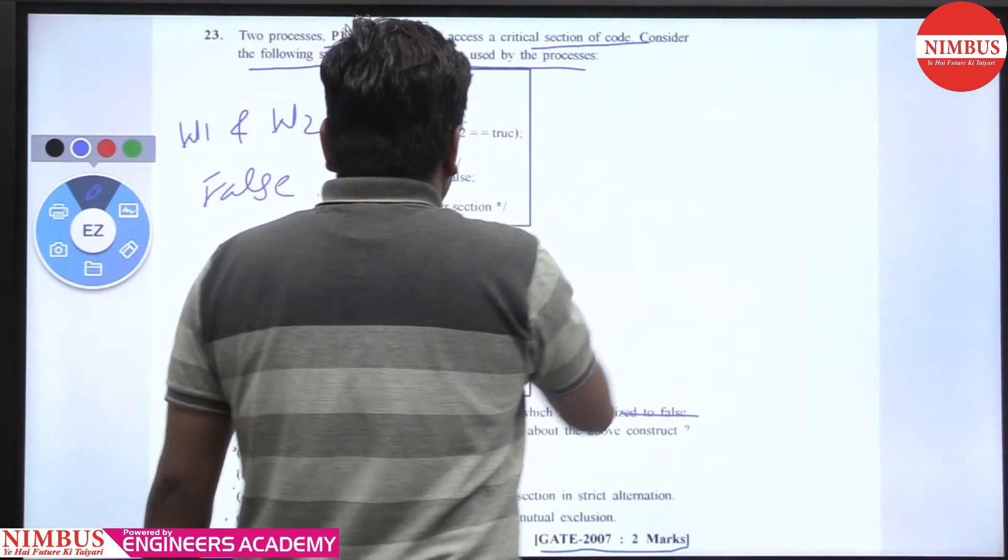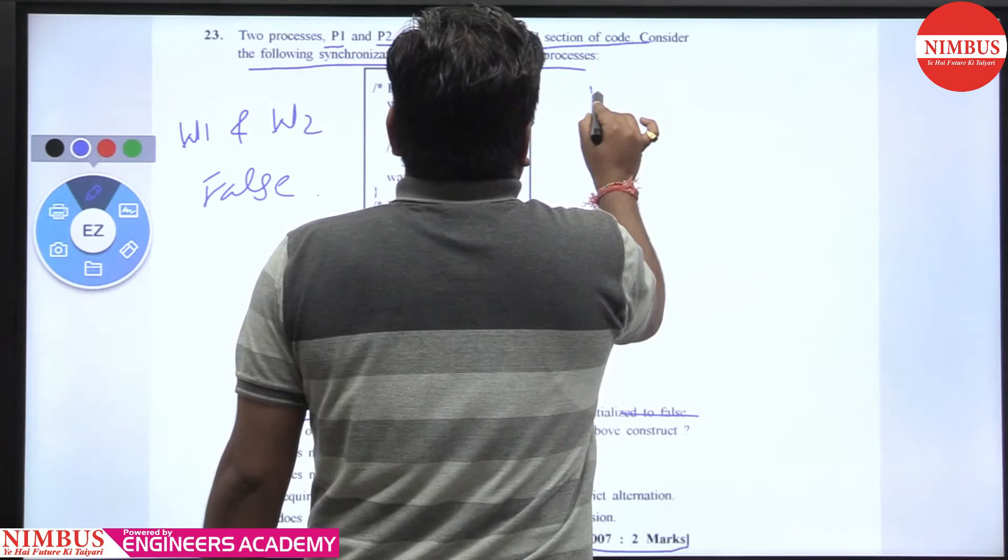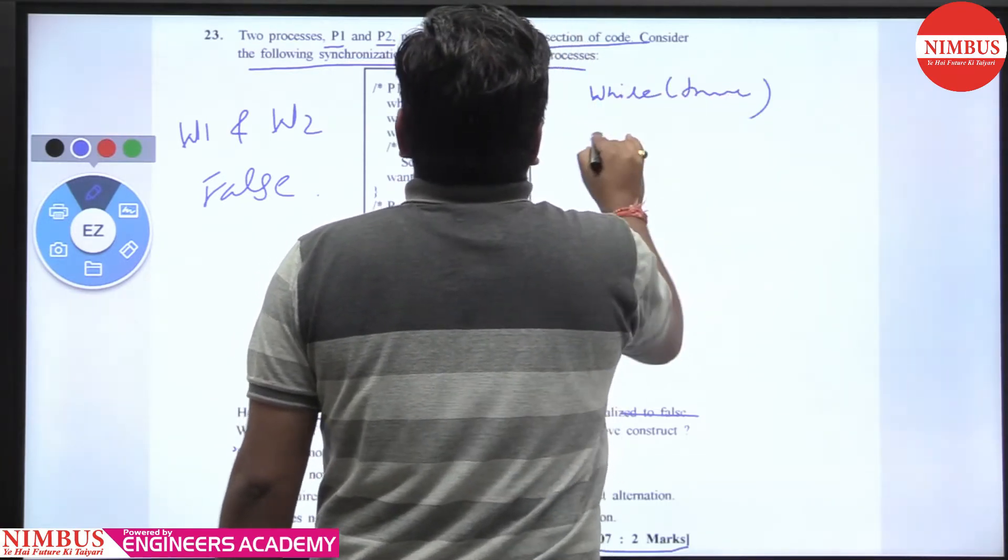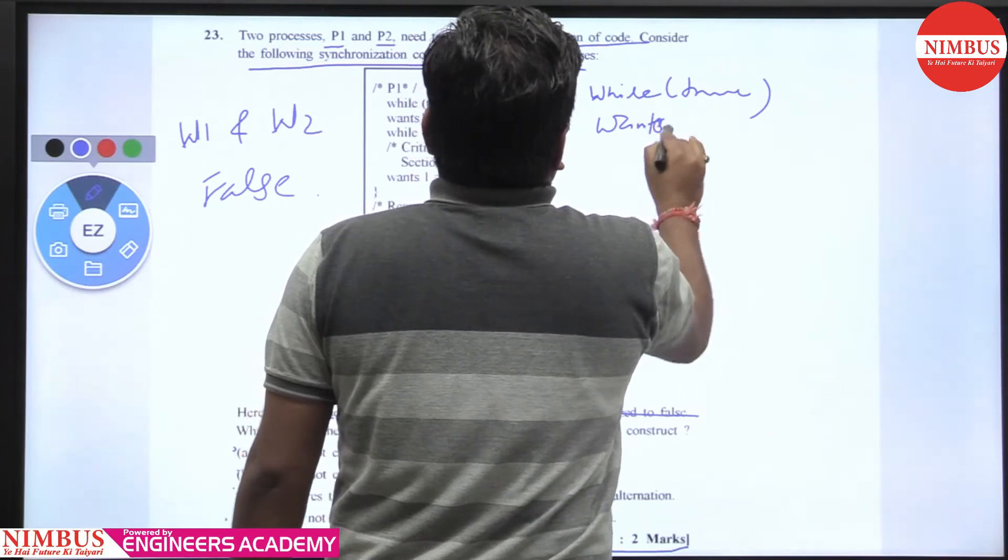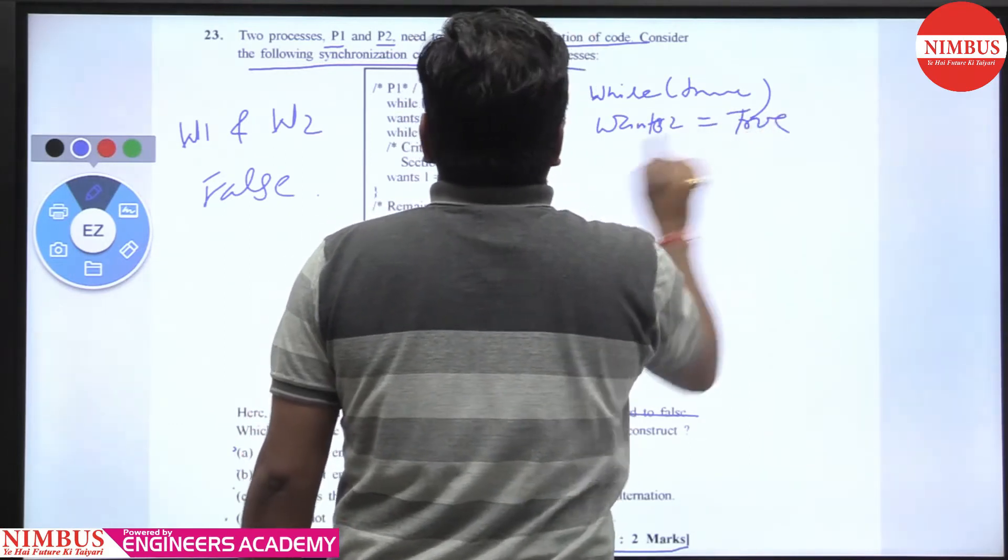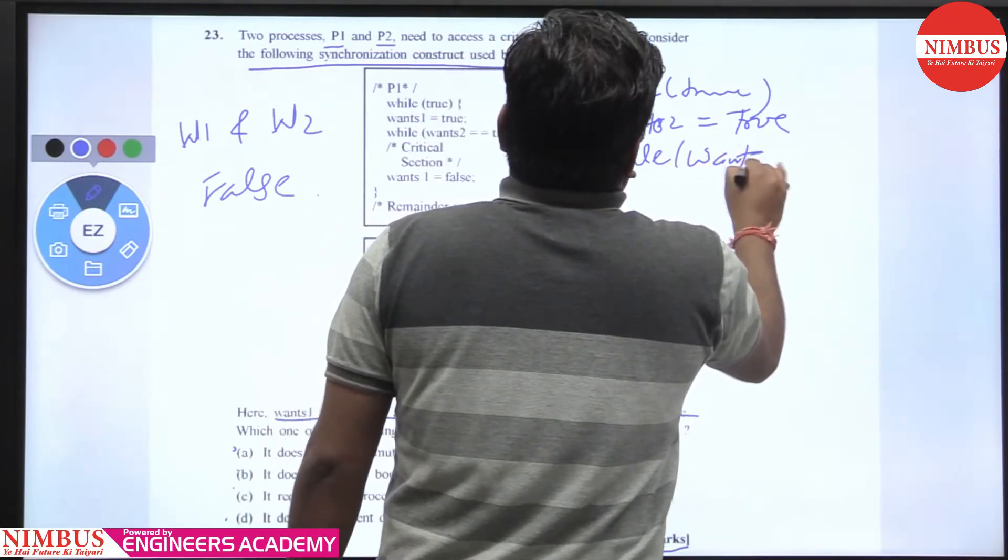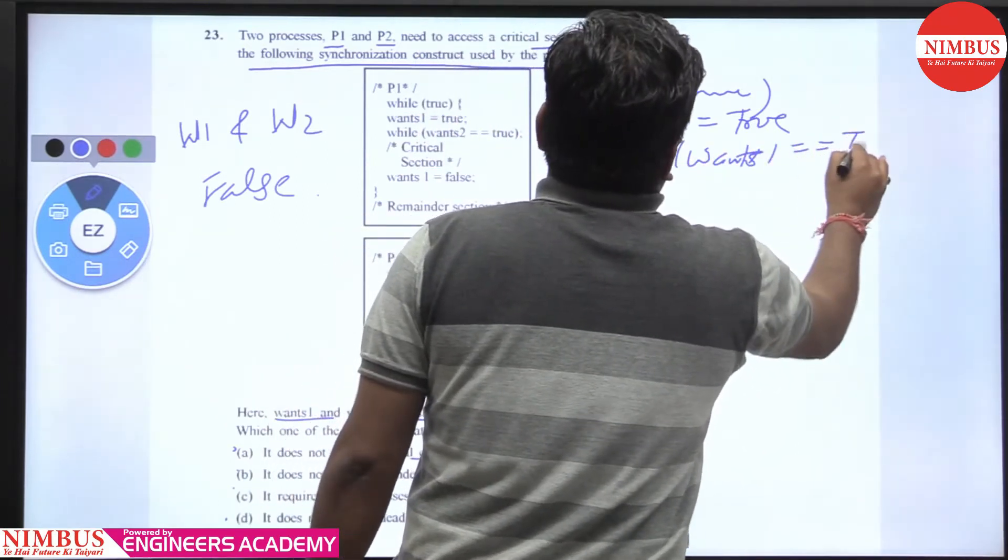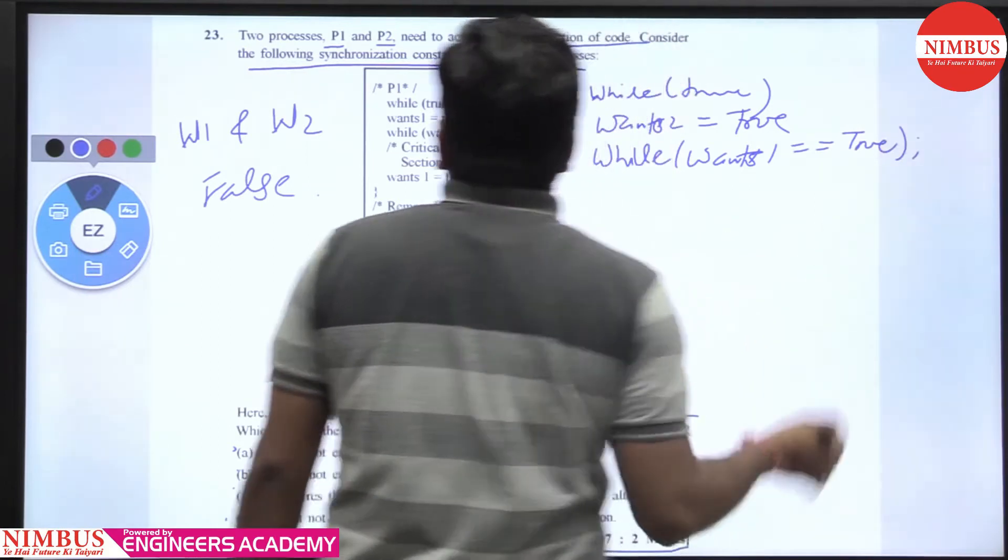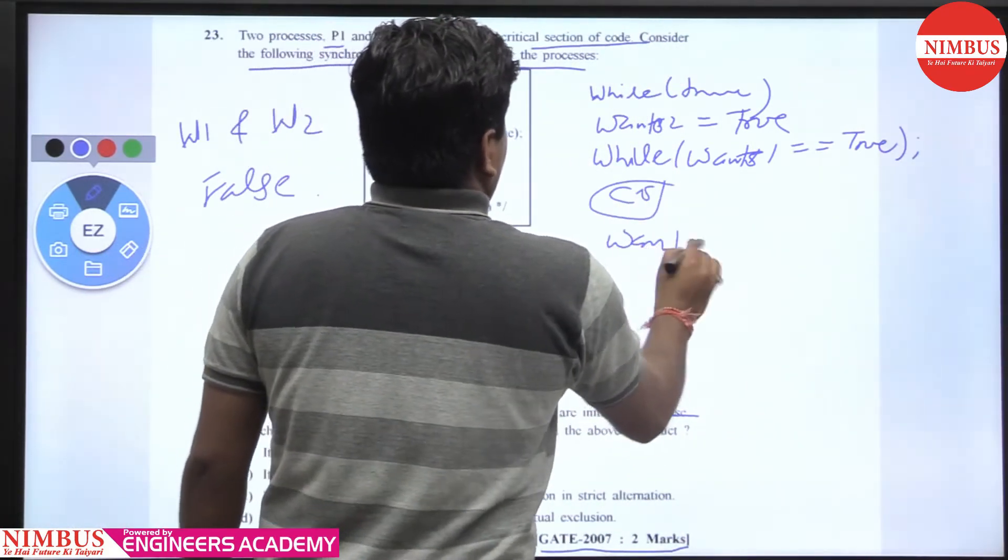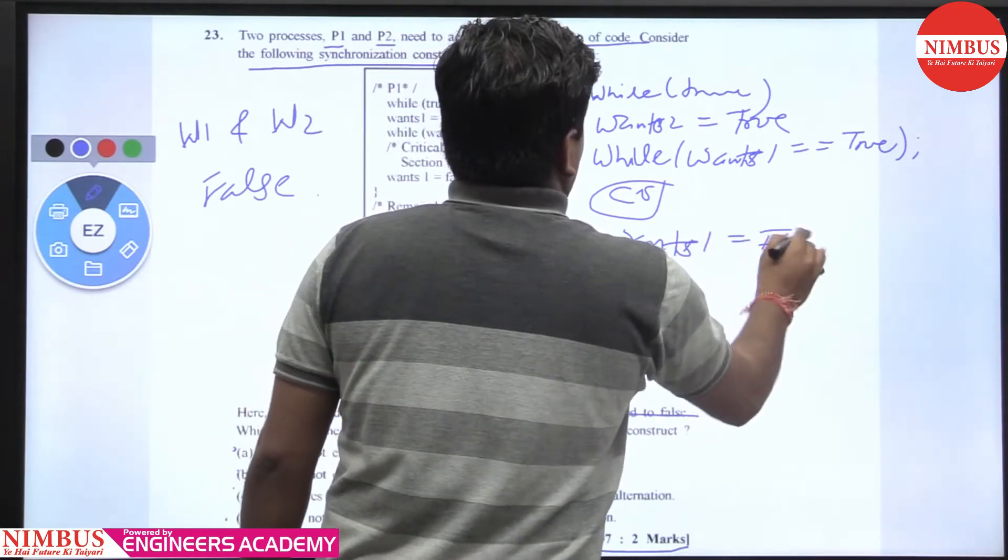So we will check, we write this code here. While true, wants2 equal to true, while wants1 equal equal to true, that is do nothing. See, after that wants1 equal to false.